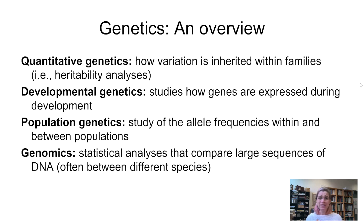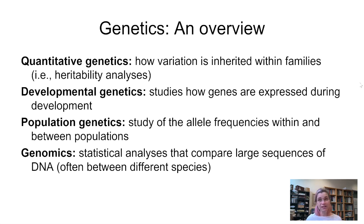Some people go into one particular kind of genetics because they're fascinated by that approach. For example, many people in genomics have a really strong background in statistics and computer science, as those skills are essential for working with massive amounts of complex data. Researchers in developmental genetics will often be very skilled at the manual and chemical manipulations needed to work with living cells and embryos.